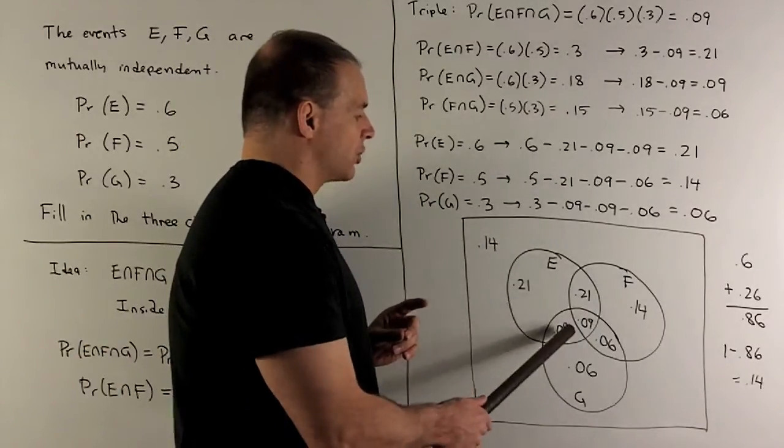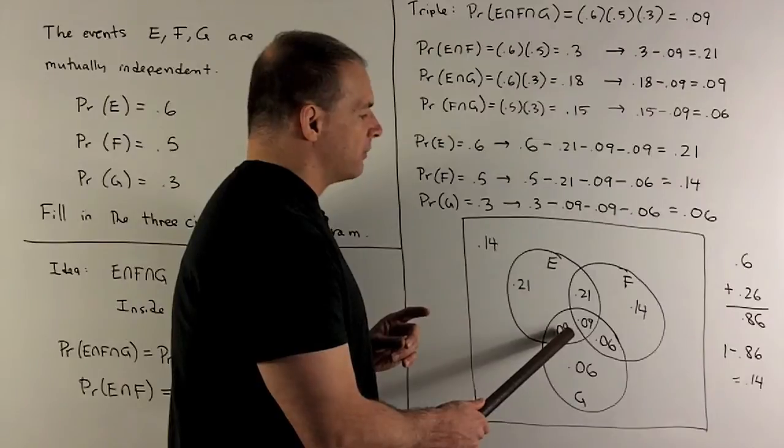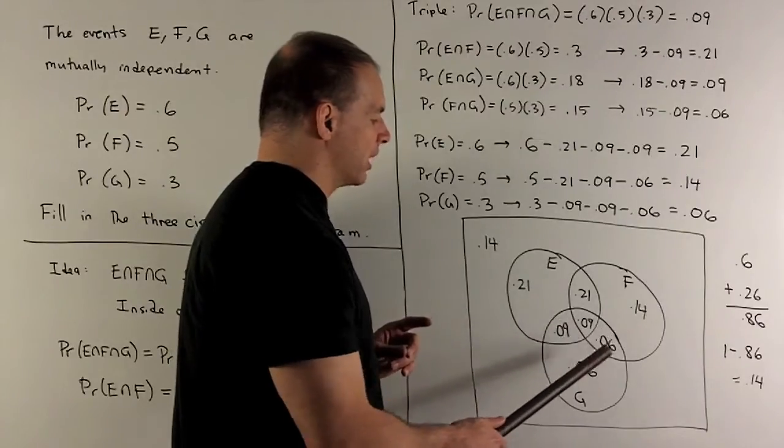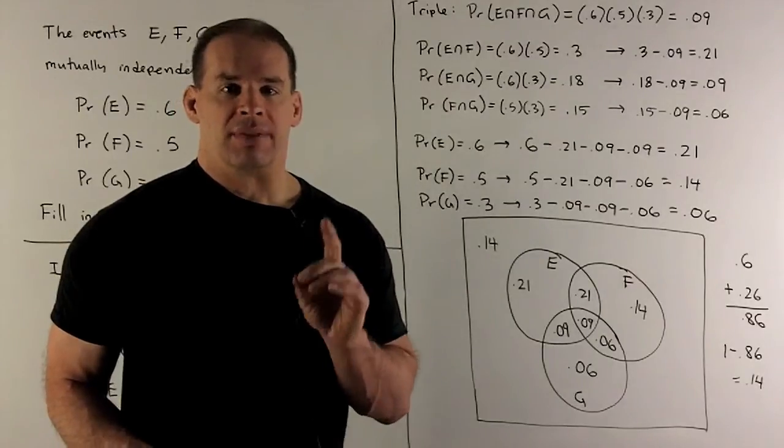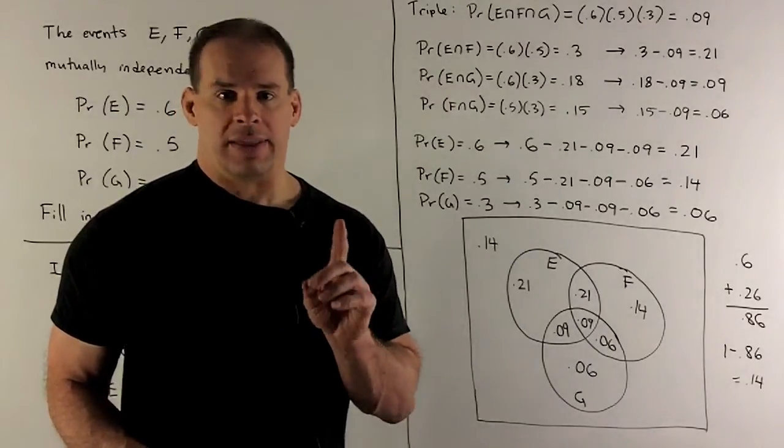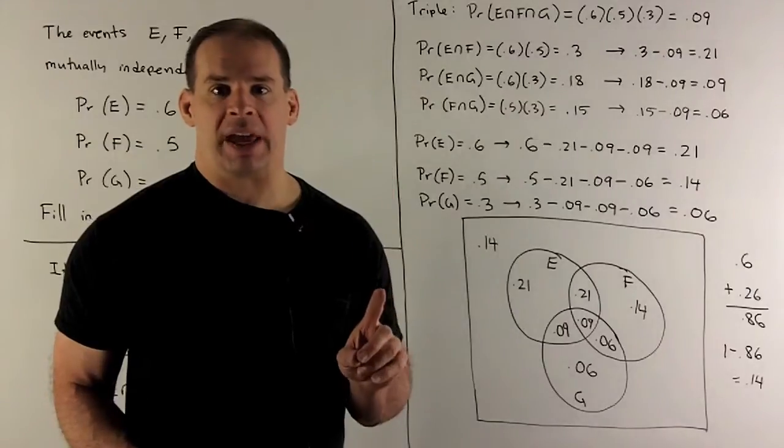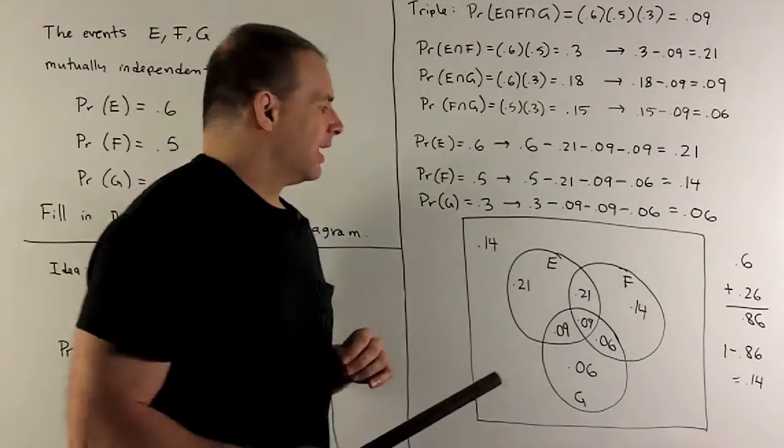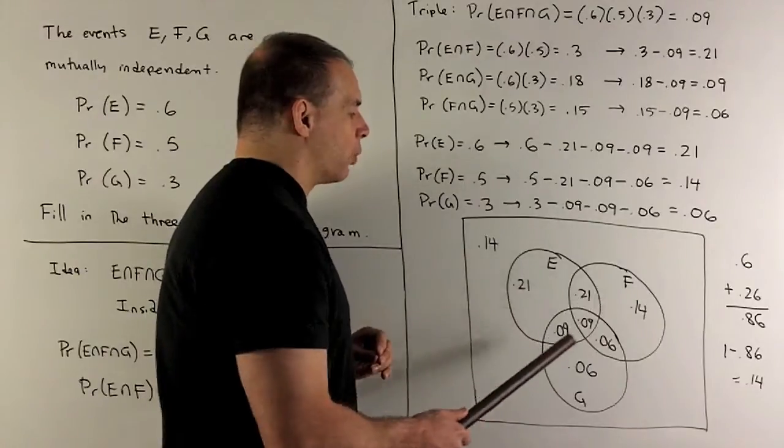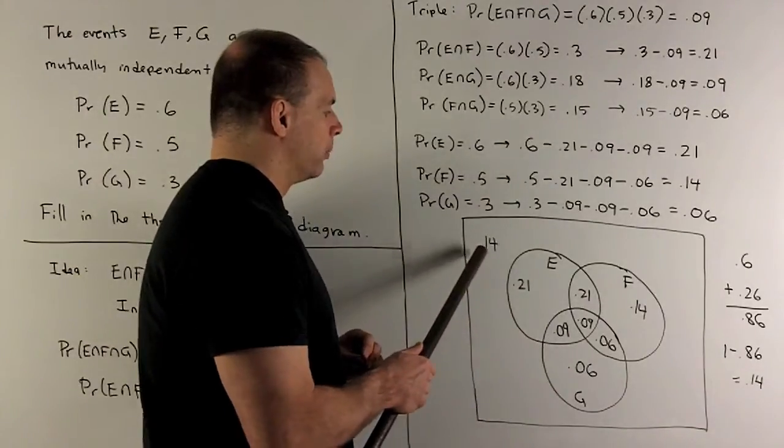Note, E is just going to be 0.6, and then what's left over is 0.14, 0.06, 0.06. If I subtract that off of one, that's the probability of the entire space, we're going to have 0.14. So that's going to be the probability of not being in E, F, or G. So 0.14.